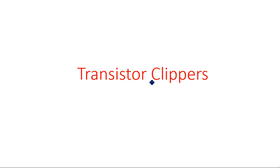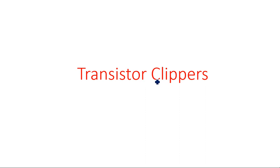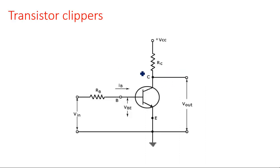A transistor is a combination of two diodes — a PN junction diode and an NP junction diode — making it a PNP or NPN transistor, which is essentially a two-diode configuration used to clip the input signal at both the positive peak and the negative peak.